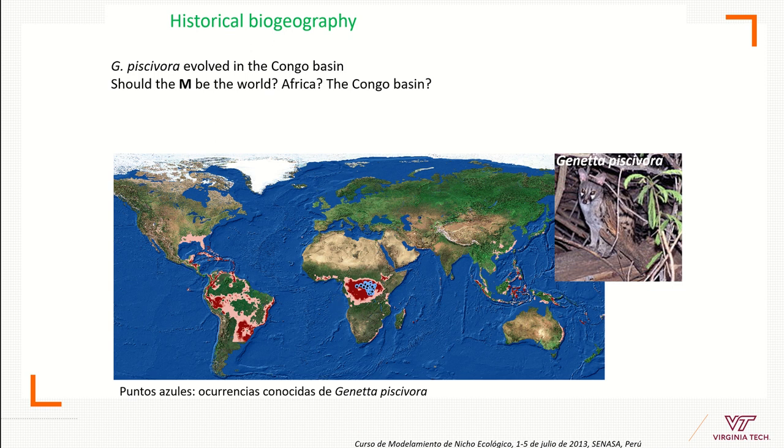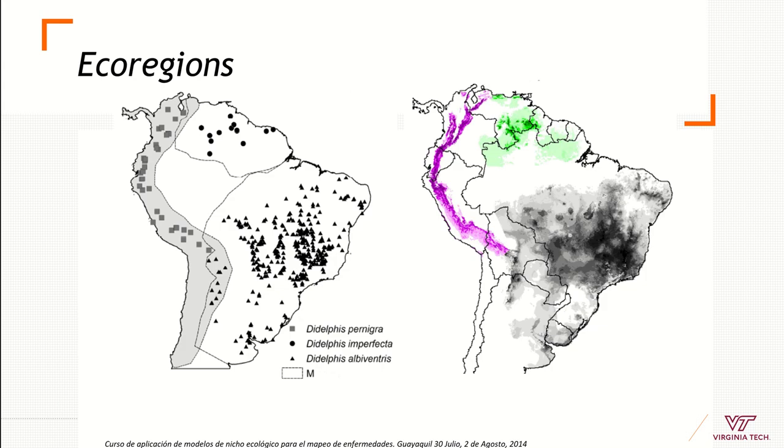Here I have another example of the Didelphis, which is another carnivore. Here I want to show you that I have three species here—one, two, and three—and these three species disperse differently. So I selected these two areas based on geographic barriers like a river here, the Amazon River, and also the Andes Mountains here.